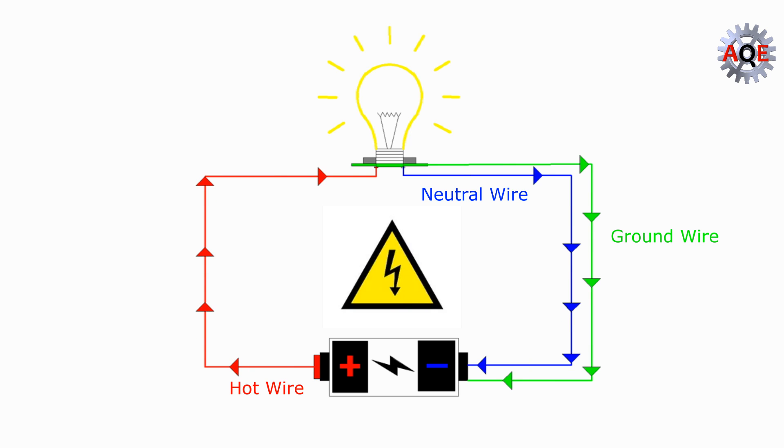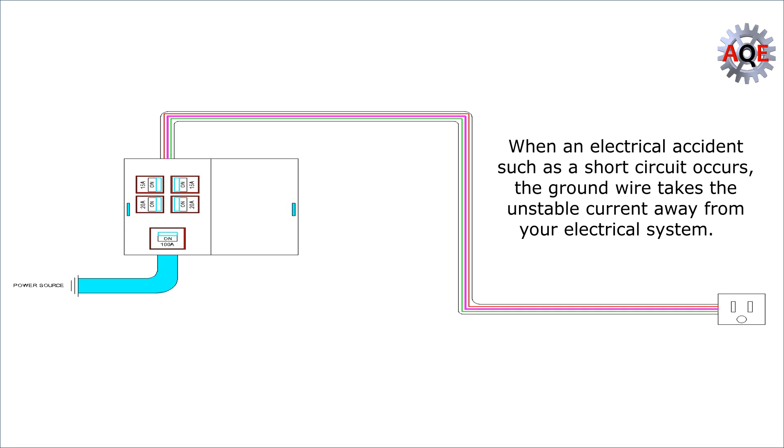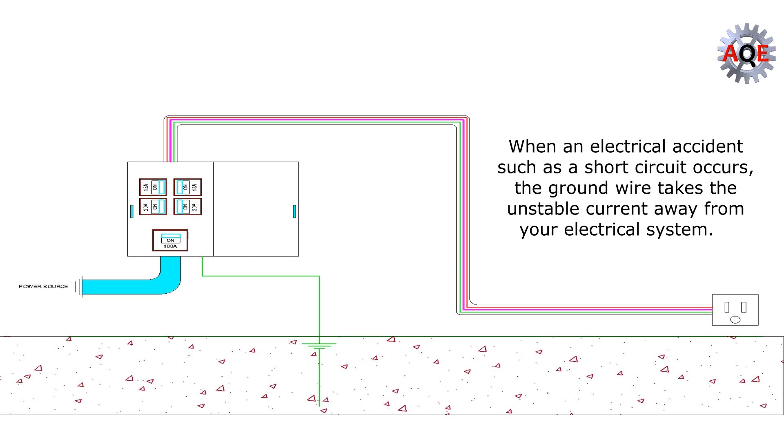Ground wire acts as defense against unstable electrical currents. Under normal circuit conditions, ground wire isn't carrying any current. But when an electrical accident such as a short circuit occurs, the ground wire takes the unstable current away from your electrical system and sends it toward the ground.